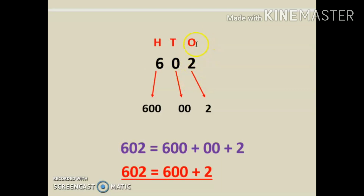Let us take another example. The number is six hundred two. First I will write ones, tens, and hundreds on the top. The place value of two is two, the place value of zero is zero, and the place value of six is six hundred.